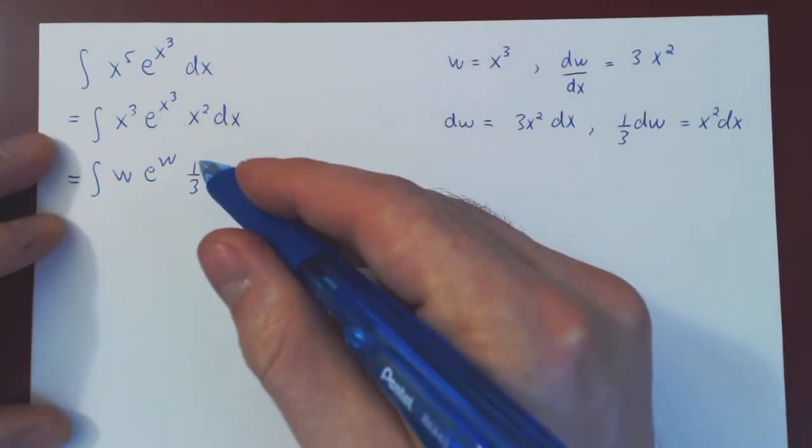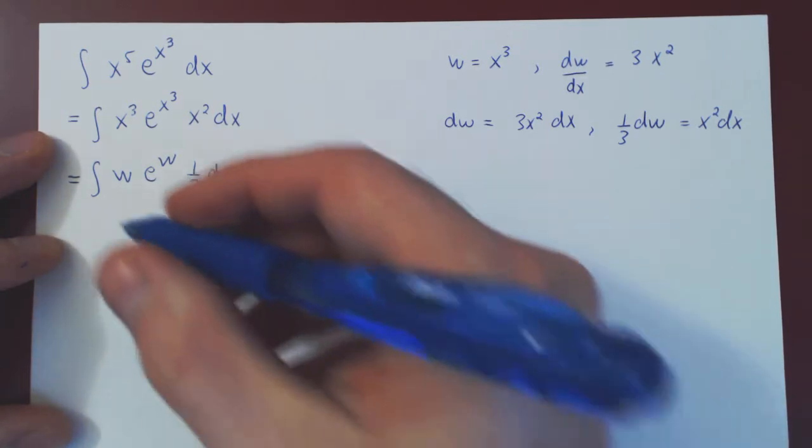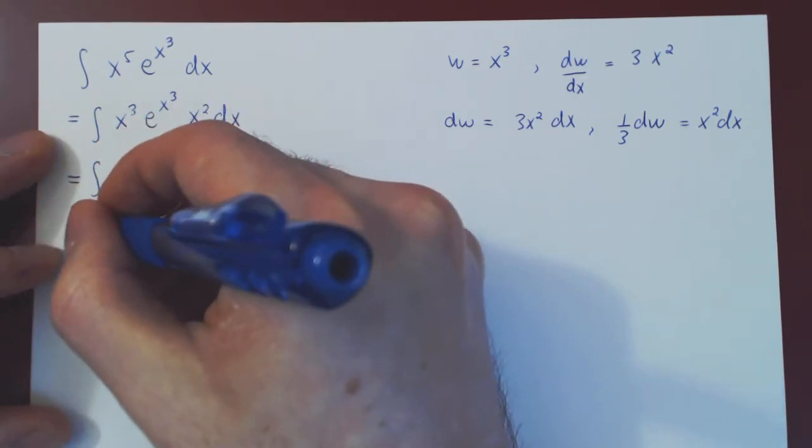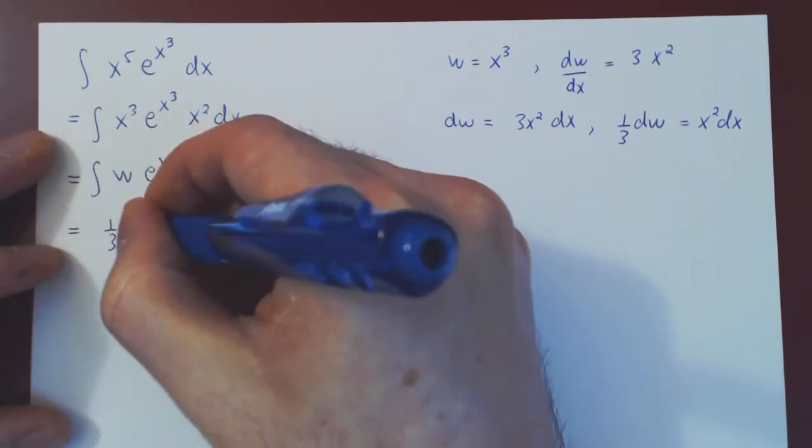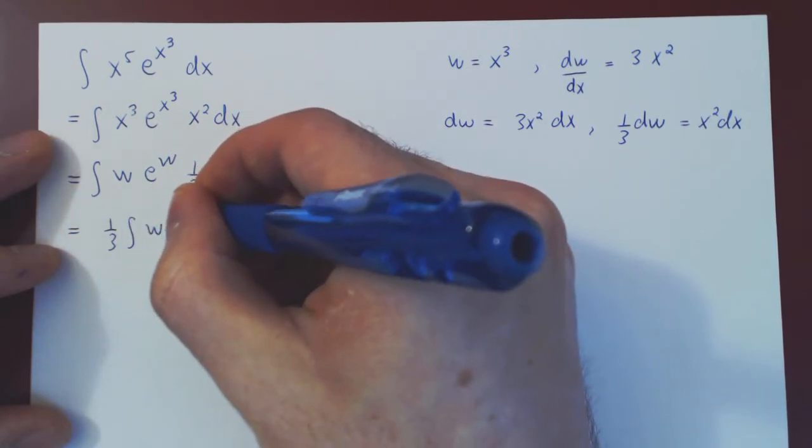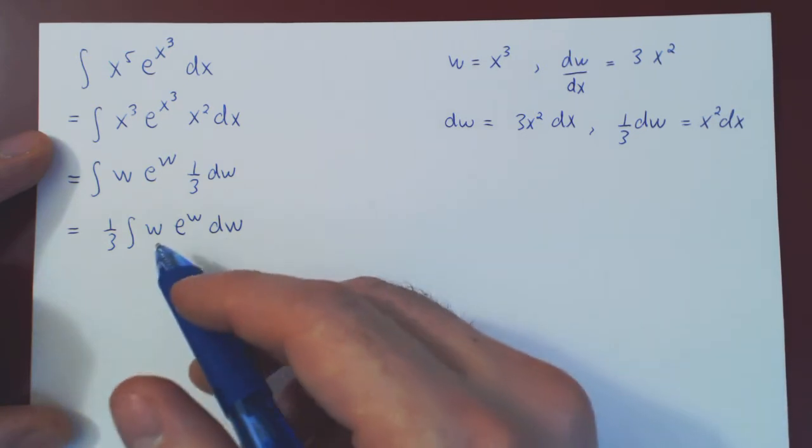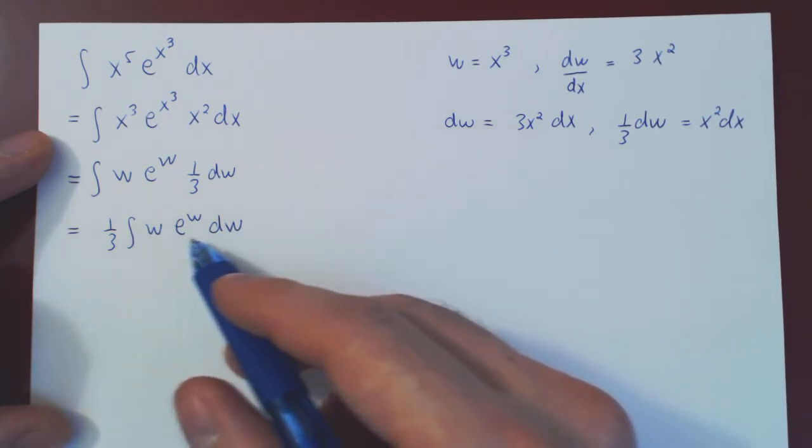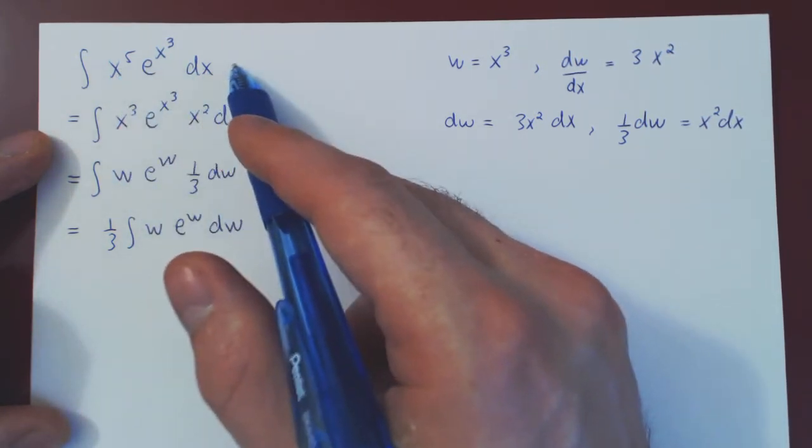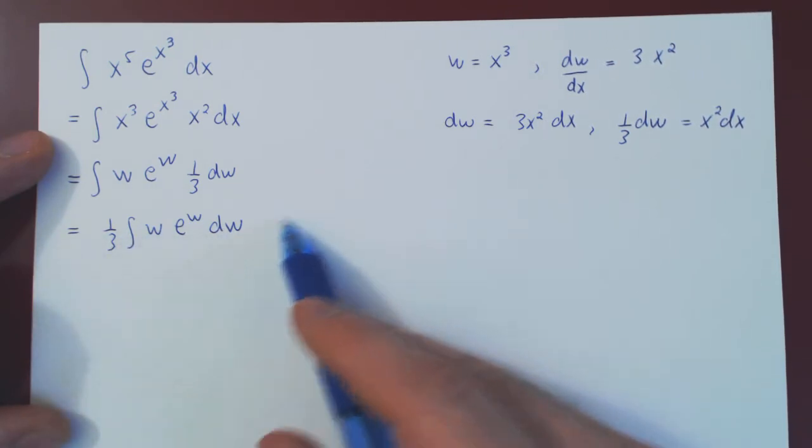As always, when you have a constant multiple, factor it outside. And now, we're left with 1 over 3 the integral of w e to the w dw. So, this is definitely simpler looking than this one. So, it looks like we've made progress with our u substitution.